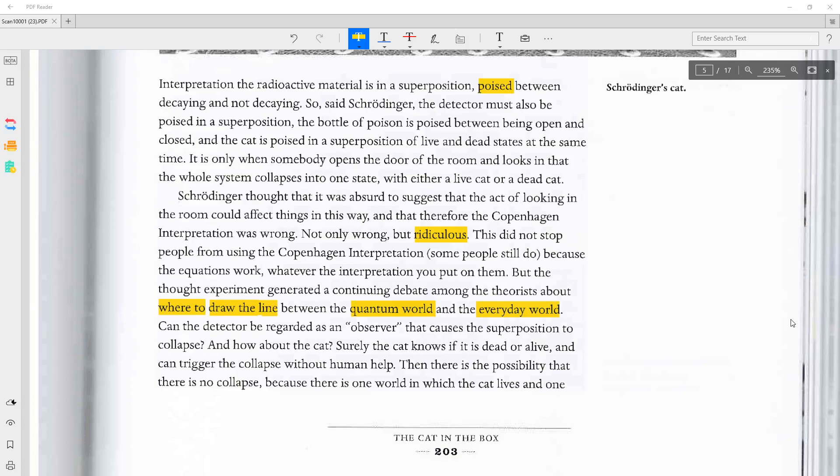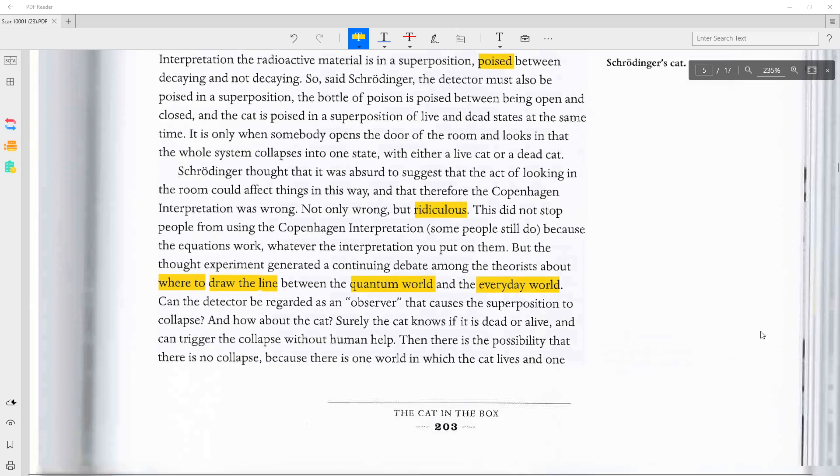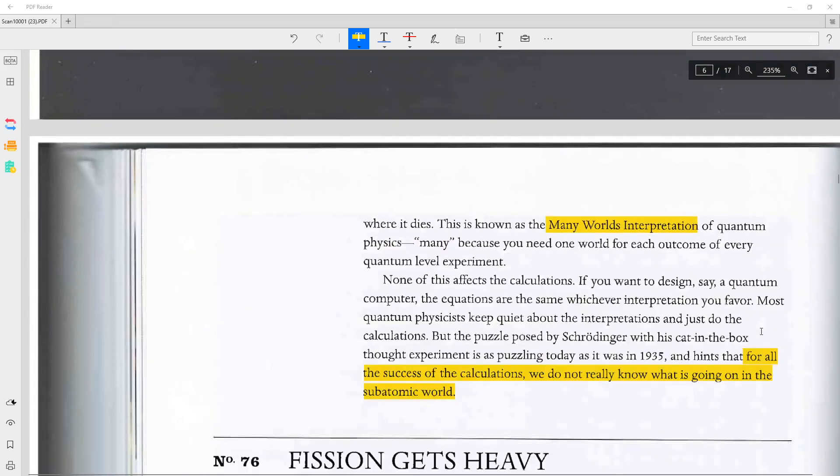But the thought experiment generated a continuing debate among the theorists about where to draw the line between the quantum world and the everyday world. Can the detector be regarded as an observer that causes the superposition to collapse? And how about the cat? Surely the cat knows if it is dead or alive and can trigger the collapse without human help. Then there is the possibility that there is no collapse because there is one world in which the cat lives and one where it dies.